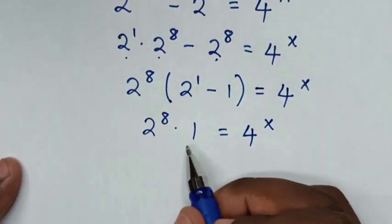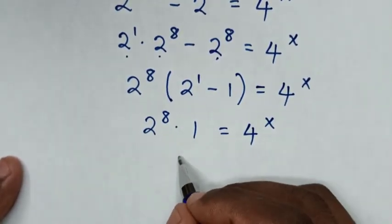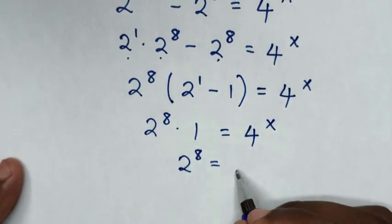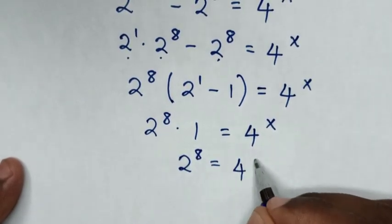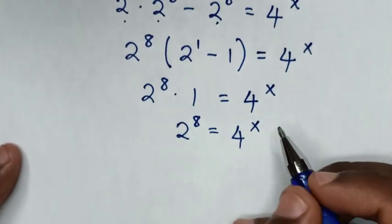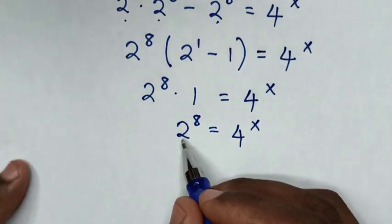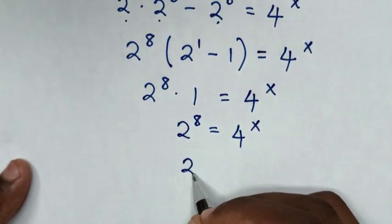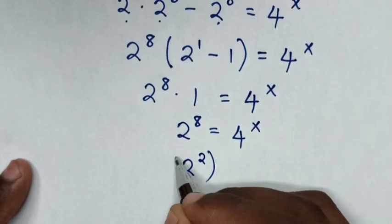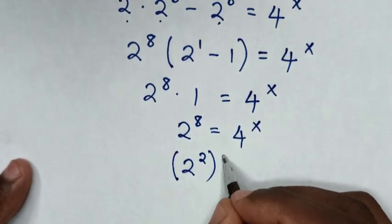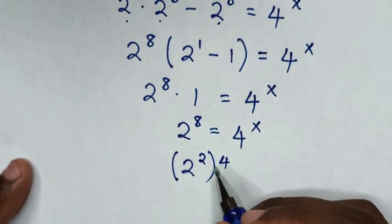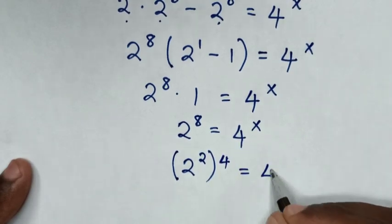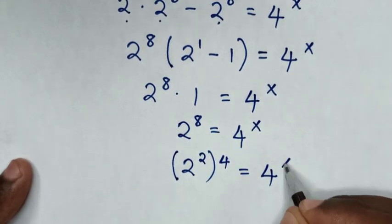Then 2 power of 8 times 1 is 2 power of 8, which is equal to 4 power x. Now, for the base of 2 to have the same base as 4, this is the same as 2 power of 2, in bracket, power of 4, because this time this is power of 8, is equal to 4 power x.